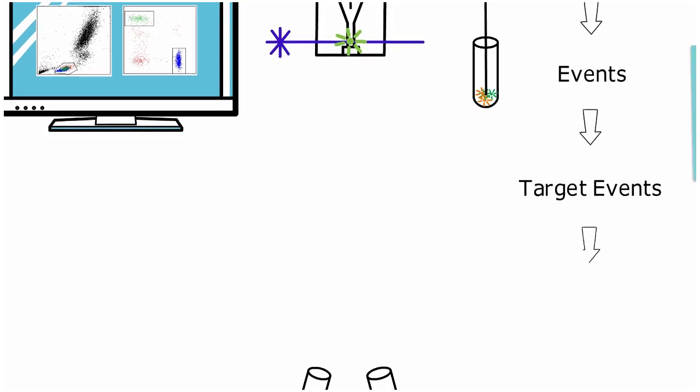After identifying the target populations, the system will apply a set of rules to determine which of those individual target cells to sort. If the target cell meets the criteria set by the sort precision mode, a charge is applied when the cell is in the drop that is about to break off from the stream. This timing is determined by the drop delay setting.